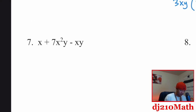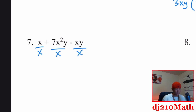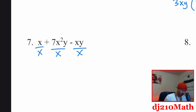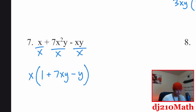Number seven: same idea — we need something common to all three terms. Look at the numbers, then each variable. There's no common number between 1 and negative 1, but there is an X in everything, so a single X comes out. There's no Y in the first term, so even though the last two terms have Y's, we can't take out a Y. So we get X times: X over X is one, plus 7XY — two X's on top, one on bottom cancels — minus Y. Greatest common factor is just X.